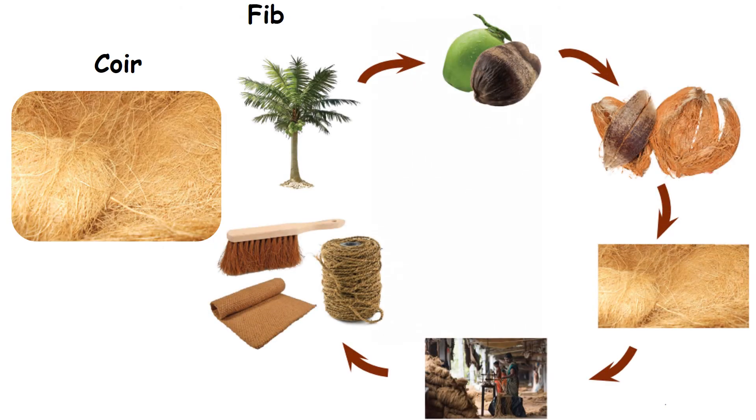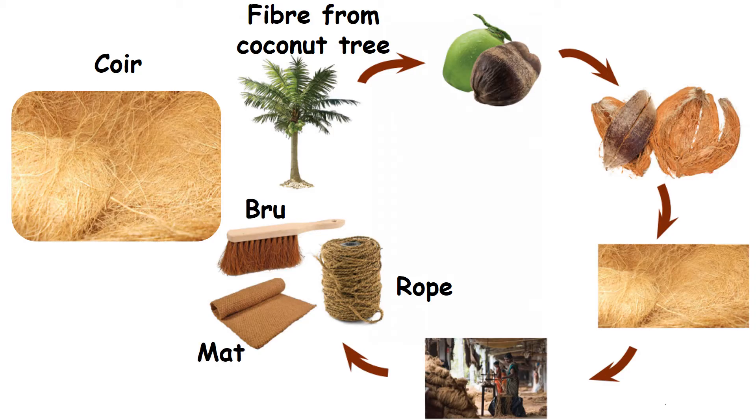Coir. It is the fiber from coconut tree. We can make rope, mat and brush from it.